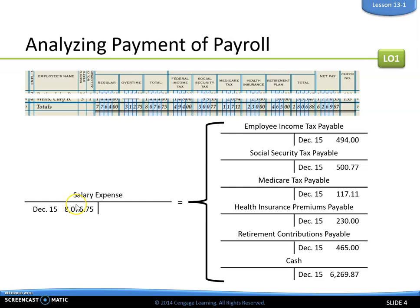If we left it like that, our one debit would not equal our credits. So the last thing we need to do is credit Cash for our net pay. This net pay is our credit to Cash — that's how much we paid to our employees.